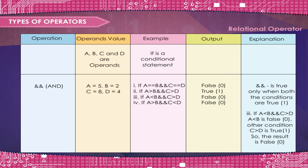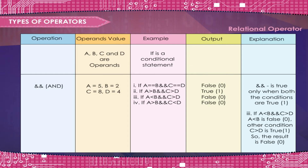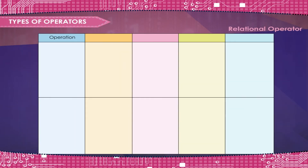If A is less than B and C is greater than D: A less than B is false, 0. Other condition: C is greater than D is true, 1. So the result is false, 0.